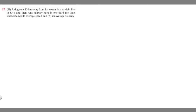In this problem we're told a dog runs 120 meters away from its master in a straight line in 8.4 seconds, and then runs halfway back in one-third of the time. We're told to calculate its average speed and its average velocity.